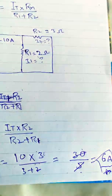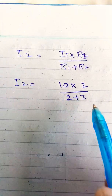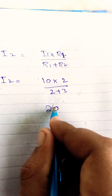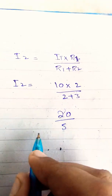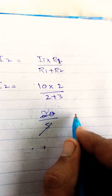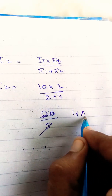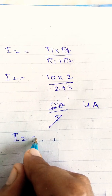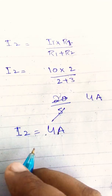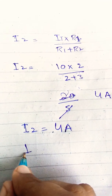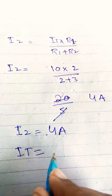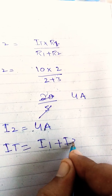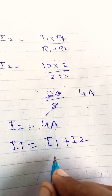Now we find i2. We put in the values: 10 times 2, divided by 2 plus 3, which gives us 20 divided by 5. So i2 equals 4 amperes.